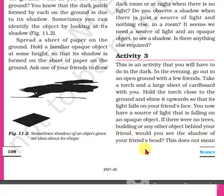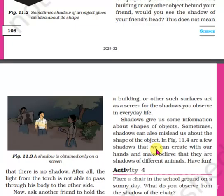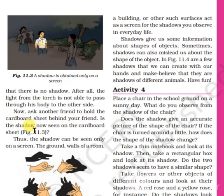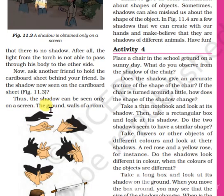If there were no trees, buildings, or any other object behind your friend, would you see the shadow of your friend's head? This does not mean that there is no shadow — after all, the light from the torch is not able to pass through his body to the other side. Now ask another friend to hold the cardboard sheet behind your friend. Is the shadow now seen on the cardboard sheet?